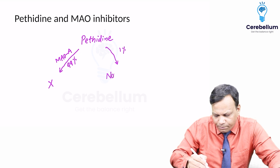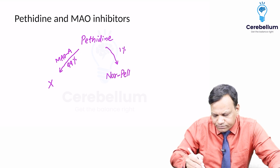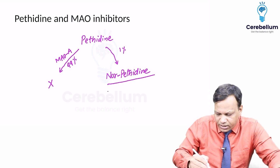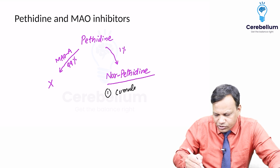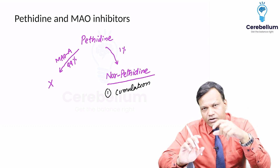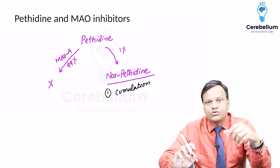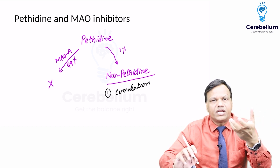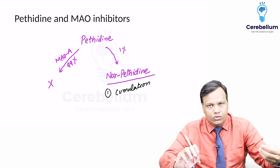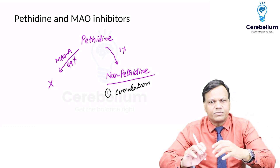A small amount of pethidine — around one percent — is converted to a compound called norpethidine. Norpethidine has two important characteristics: first, it shows the property of accumulation and is very long-acting. So whenever norpethidine is produced, it does not go away; it remains in the body.